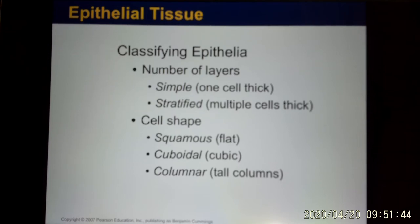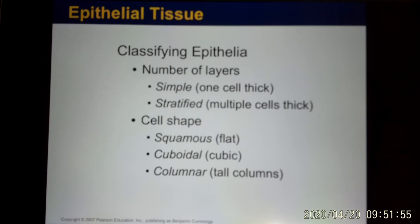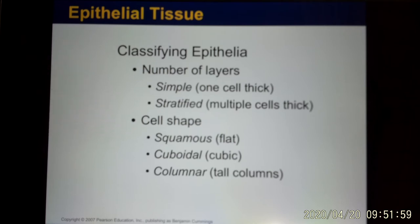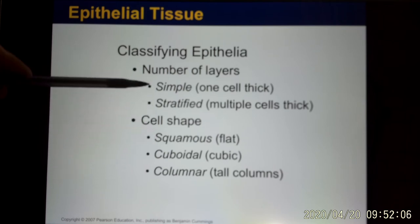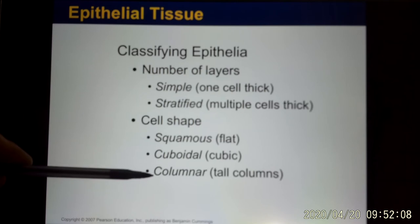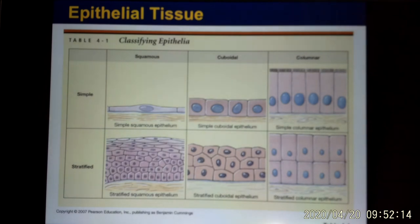Epithelium cells are categorized by number of layers and cell shape. One layer is called simple; more than one is stratified. Shapes include flat (squamous), cube-shaped (cuboidal), and long (columnar). Combinations give us: simple squamous, simple cuboidal, simple columnar, and stratified squamous — six different kinds of epithelium tissues overall.